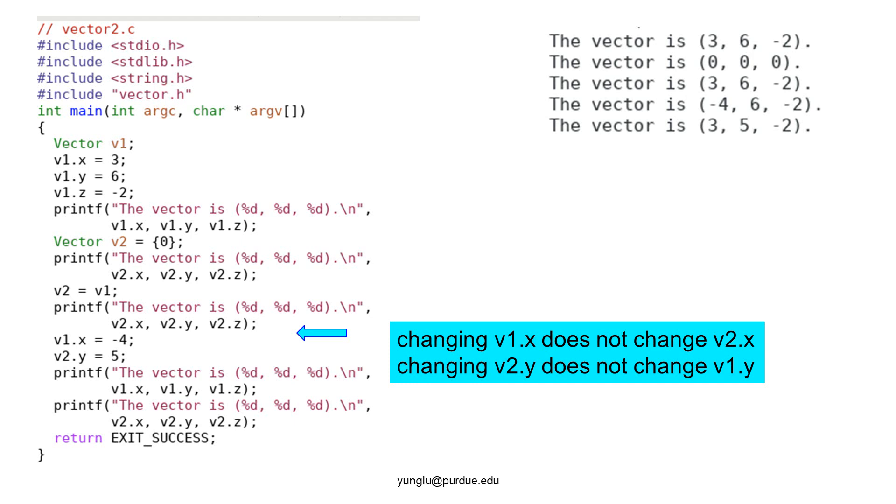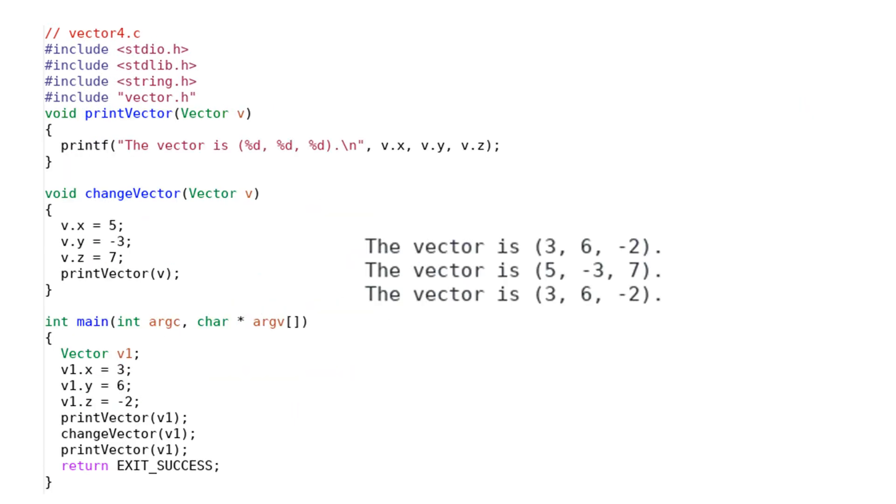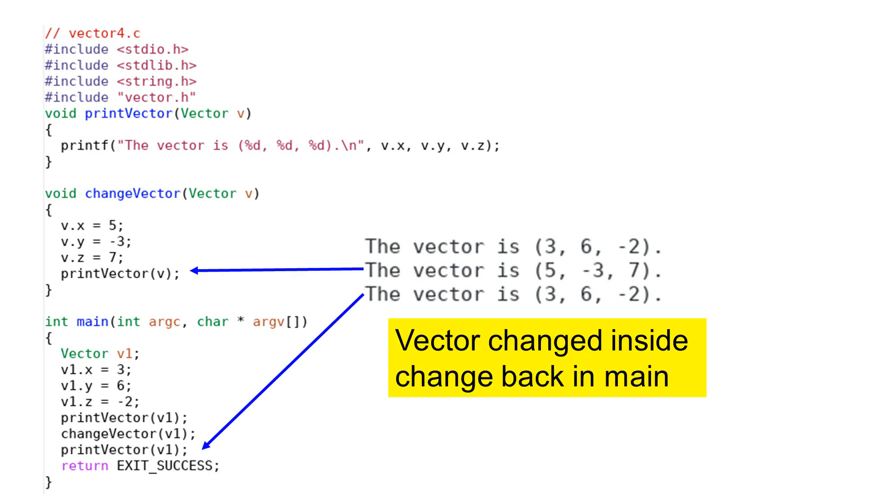The next example shows passing an object to functions. This is the program's output. The program has two functions called print vector and change vector. In the main function, the vector's attributes are 3, 6, and minus 2. This vector is passed to the change vector function as an argument. The vector's attributes are changed to 5, minus 3, and 7. After leaving the change vector function and back to the main function, the vector's attributes are still 3, 6, and minus 2. What is happening? What does this mean?